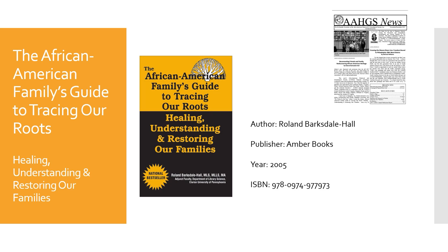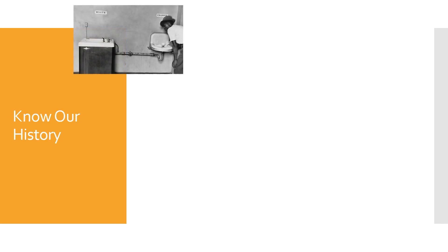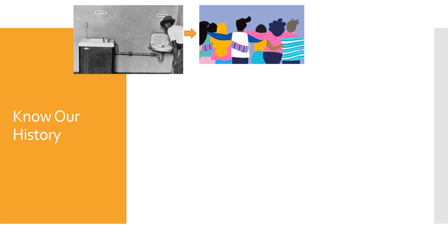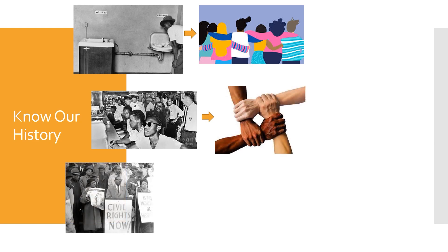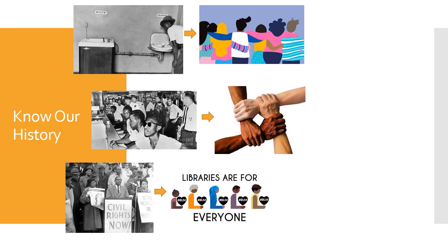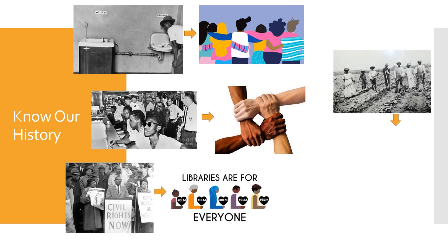The book follows the advice given to every genealogy beginner, which is talking to your oldest relatives first. He rightfully emphasizes the power of story, knowledge, and experience that seniors today have that no history book can truly convey. One of his 12 keys to health, wealth, and success is to know our history. Those that lived in segregated communities, those who fought for civil rights, those who survived insults and death threats, and scrimped and saved to go from sharecropping to land and home ownership, have incredible stories to tell.